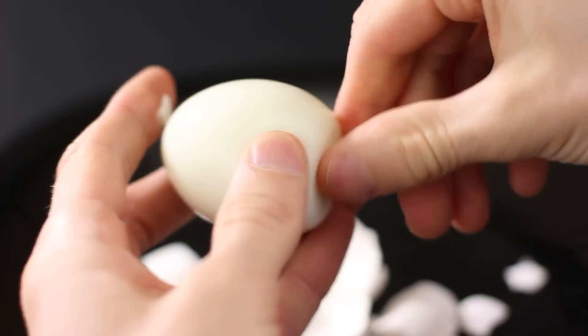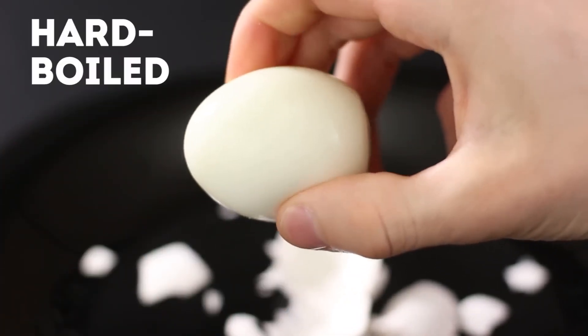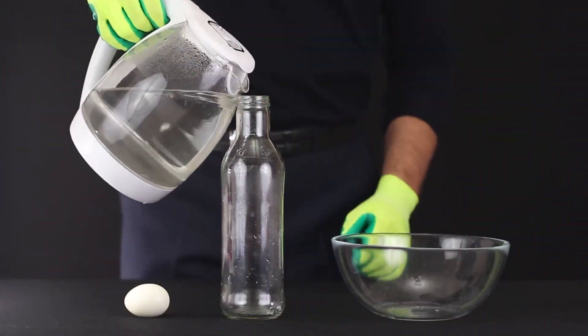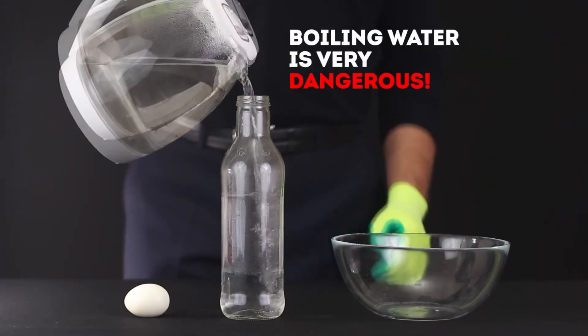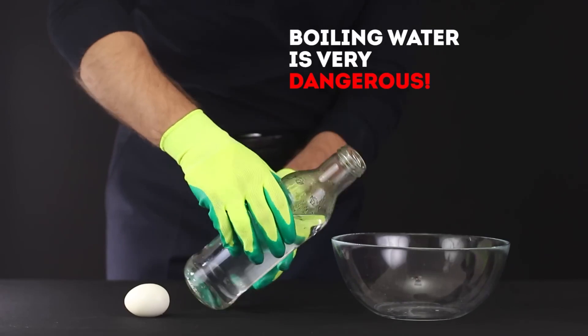This time, we will use boiled eggs, hard-boiled and peeled from the shell. Now, boil your water in a kettle. Be careful with the boiling water. Pour it into a bottle. And when it heats up, pour it into a bowl.